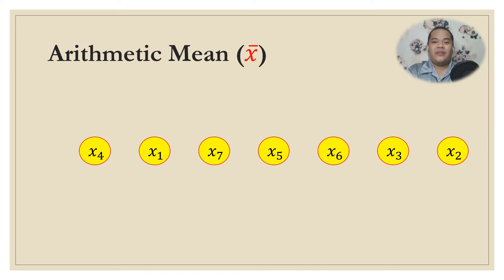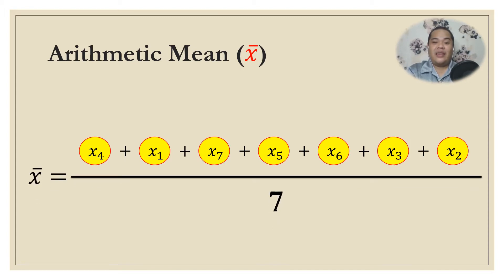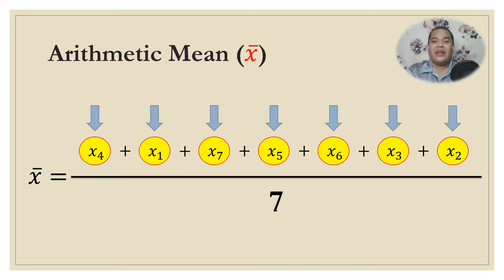Using the formula, we add all the scores and then divide by the number of scores in the data set. That is (x₄ + x₁ + x₇ + x₅ + x₆ + x₃ + x₂) all over 7, because there are seven scores in the data set.